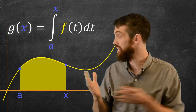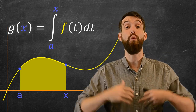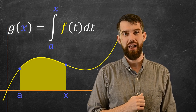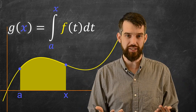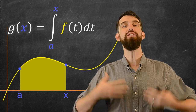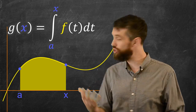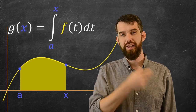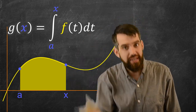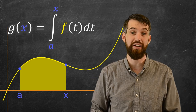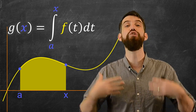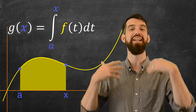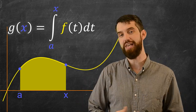One thing to note is that I've drawn a positive function here — this function is over the x-axis. So as I go to the right, as x is increasing, the area is also increasing. So g(x) is an increasing function as long as f is positive. If in a different graph the function dipped beneath the x-axis and was negative at some point, then g(x), the accumulation function, would start decreasing, as I'd be adding negative area contributions from beneath the x-axis.